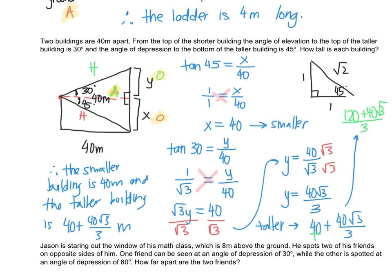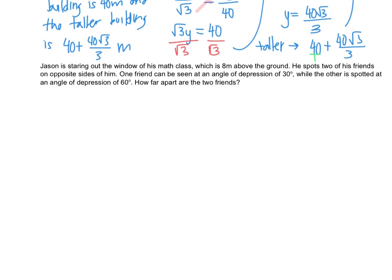Let's try one more example, which is also going to involve multiple triangles. Jason is staring out the window of his math class, which is 8 meters above the ground. He spots two of his friends on opposite sides of him. One friend can be seen at an angle of depression of 30 degrees, while the other is spotted at an angle of depression of 60 degrees. How far apart are the two friends? Like always with trig application, let's start with a diagram.